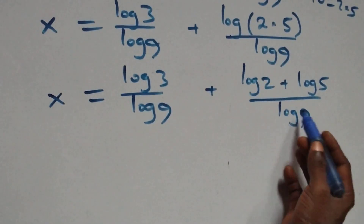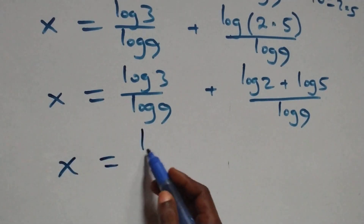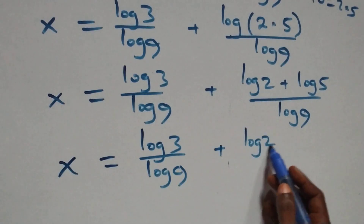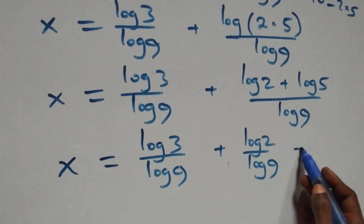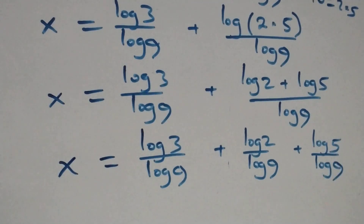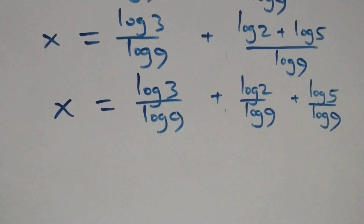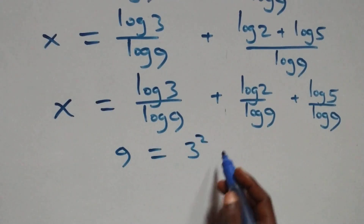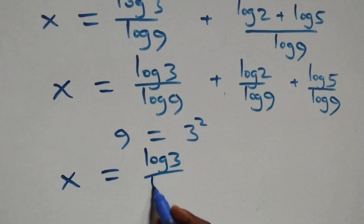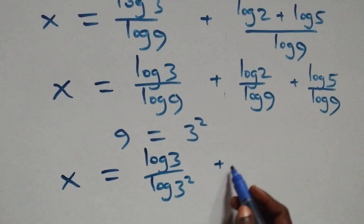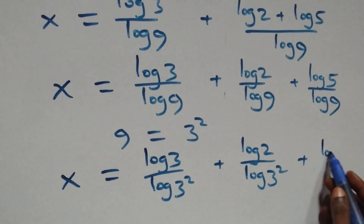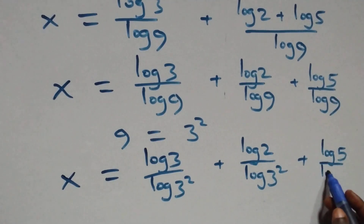At this point we separate this into two fractions and we have x equals log 3 over log 9 plus log 2 over log 9 plus log 5 over log 9. From here, we can write 9 as 3 times 3, which is 3 squared. So all we have becomes x equals log 3 over log(3 squared) plus log 2 over log(3 squared) plus log 5 over log(3 squared).